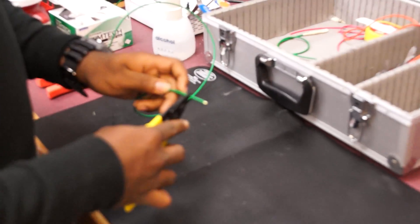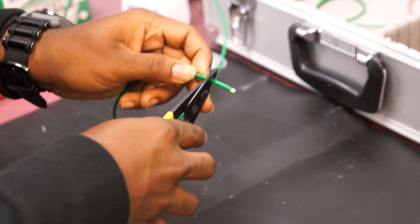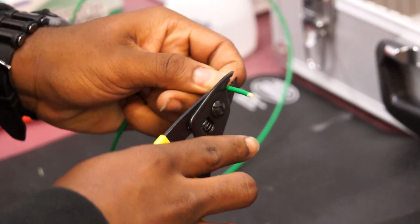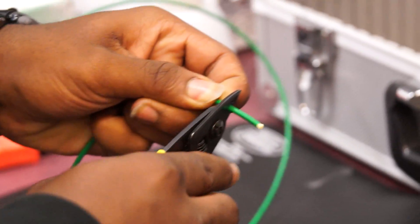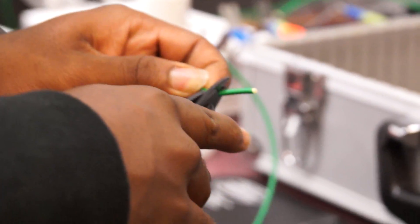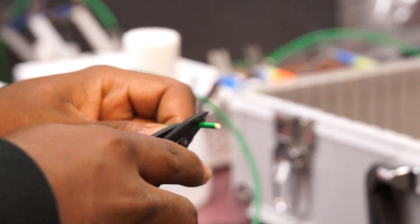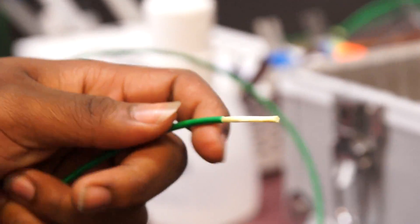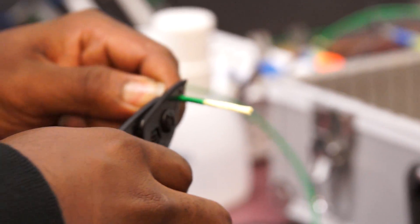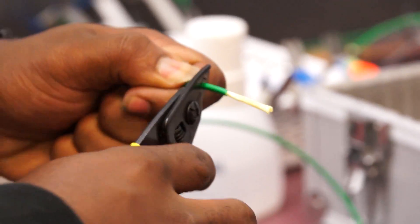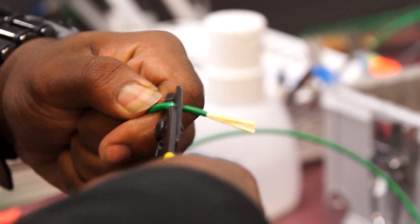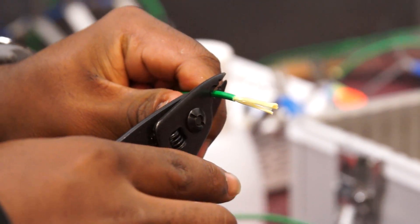So first we're going to start off by stripping the sheath back. Take it piece by piece. You want it about an inch and a half. Just got to be careful, make sure you don't break the glass.